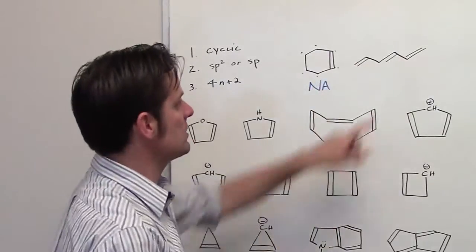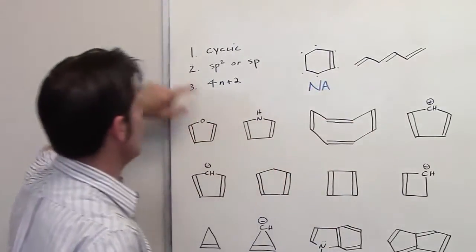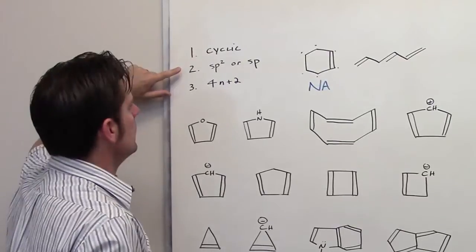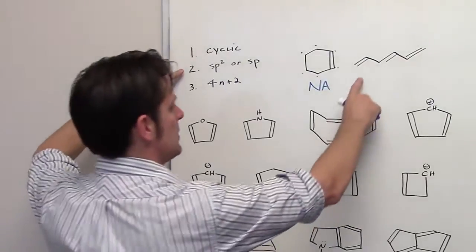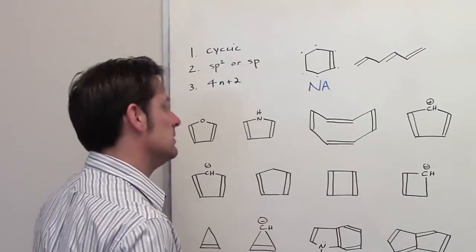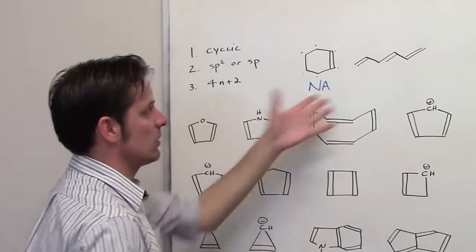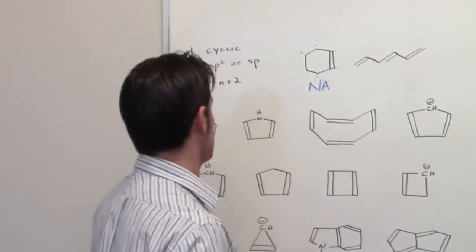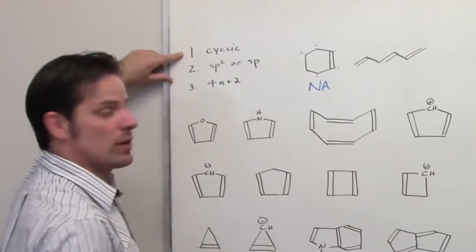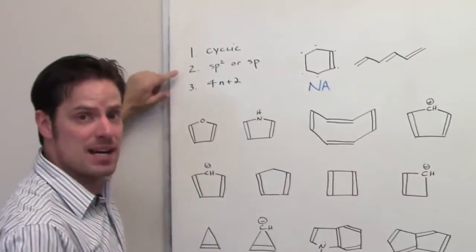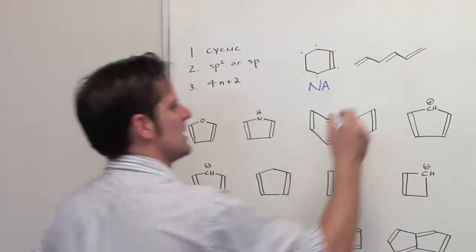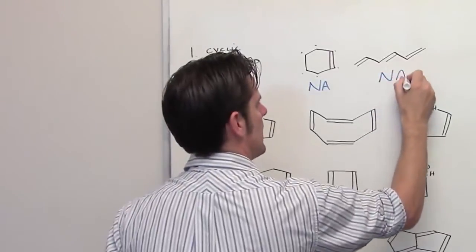Now we'll move to this compound. Is it cyclic? No. Are all of the atoms in it either sp2 or sp? Well, every single carbon atom in that molecule is sp2. So it does not meet criterion 1, but it does meet criterion 2. That means it is also non-aromatic.